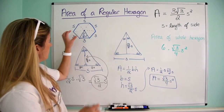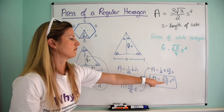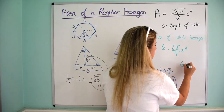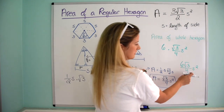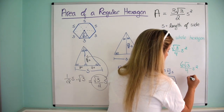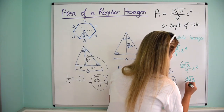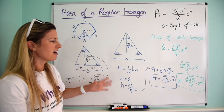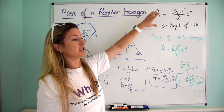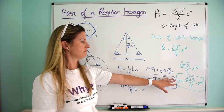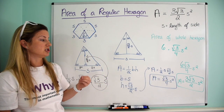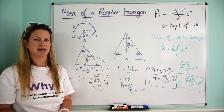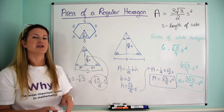That gives us six root three over four s squared. Since both six and four are divisible by two, we simplify: six divided by two is three, four divided by two is two. So the area equals three root three over two s squared. And there we have it — that matches the formula I told you at the beginning. You can plug in seven for s in the other video and you'll get the same answer.